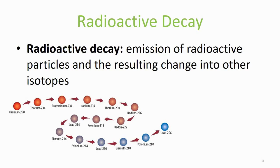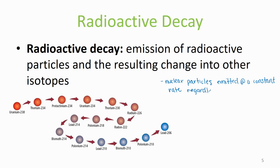Radioactive decay is the emission of radioactive particles and the resulting change into other isotopes. This is a very good way to measure the age of something because these nuclear particles are emitted at a constant rate, regardless of pressure, temperature, or any physical changes.